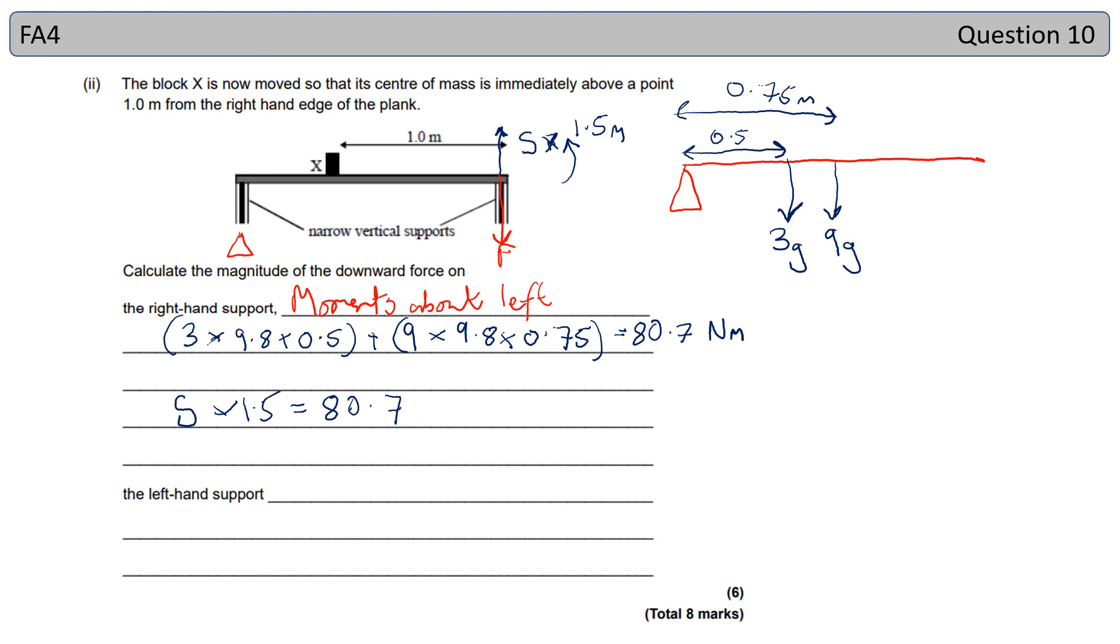So my support force times 1.5 is equal to 80.7. Therefore, my support force is equal to 80.7 over 1.5. So that gives me a force of 53.8 Newtons. That's what my support force has to be. That is going to be equal to the force that is acting downwards there.